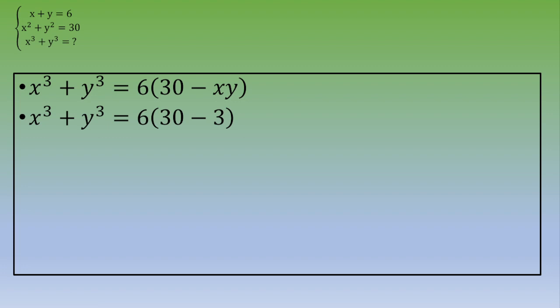Now, we know that the value of xy is 3. So you've got x cubed plus y cubed equals 6 times 27. And this is 162.